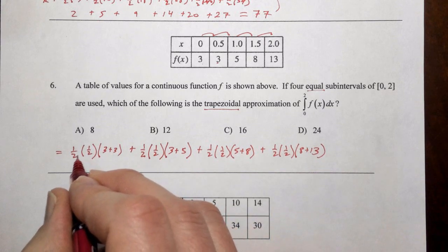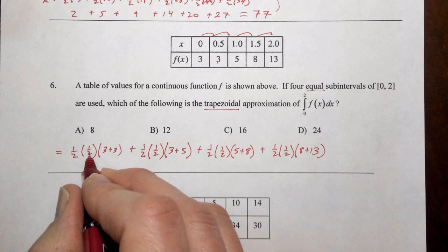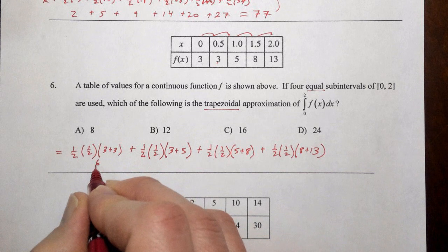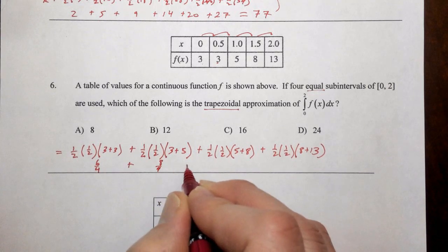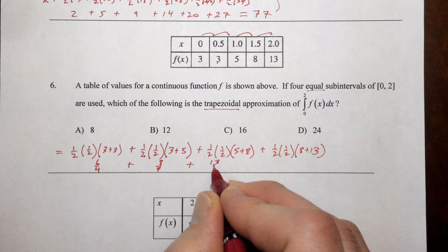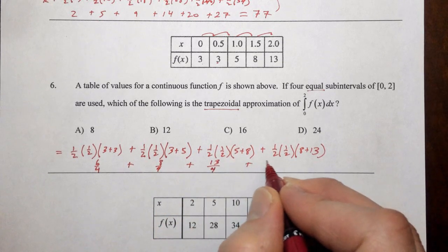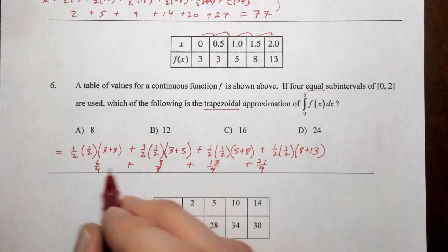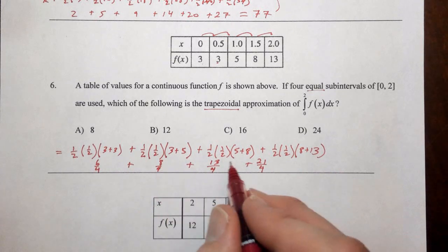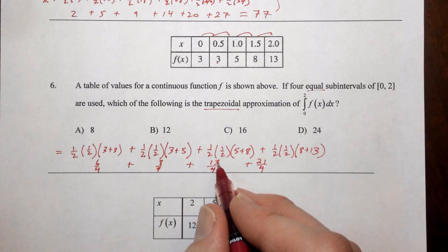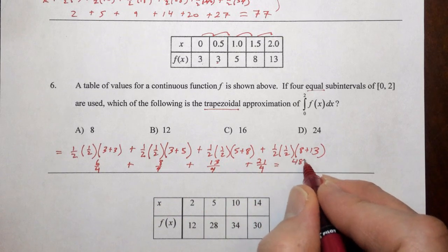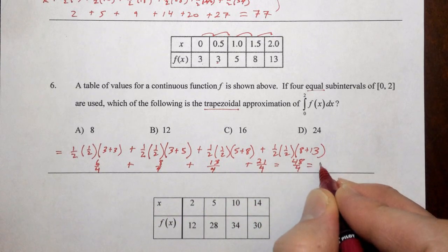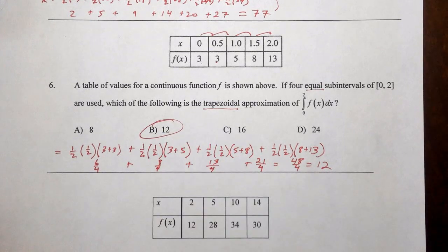So we have a half times a half, it's a quarter, times six, so this is six quarters. This will be eight quarters. This will be thirteen quarters, and this will be twenty-one quarters. So six plus eight is fourteen, plus thirteen is twenty-seven, plus twenty-one is forty-eight. So we have forty-eight quarters, which is twelve. So there's our answer.